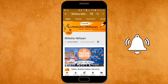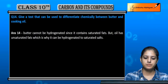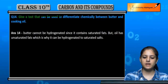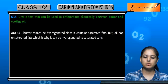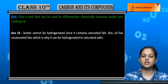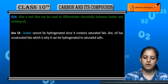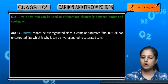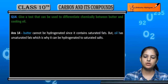Question 14: Give a test that can be used to differentiate chemically between butter and cooking oil. To differentiate butter from cooking oil using a chemical test, we use hydrogenation, because butter is hydrogenated.